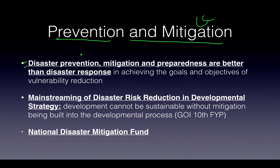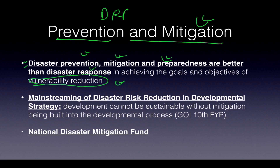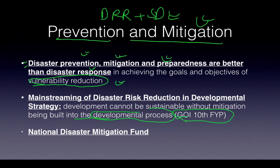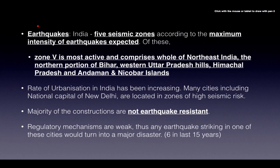Prevention, mitigation, and preparedness are always better than response because they help reach vulnerability reduction goals. Disaster risk reduction can be achieved when combined with sustainable development — mitigation must be built into the development process. This was a 10th Five Year Plan principle. India also has a National Disaster Mitigation Fund for prevention and mitigation.